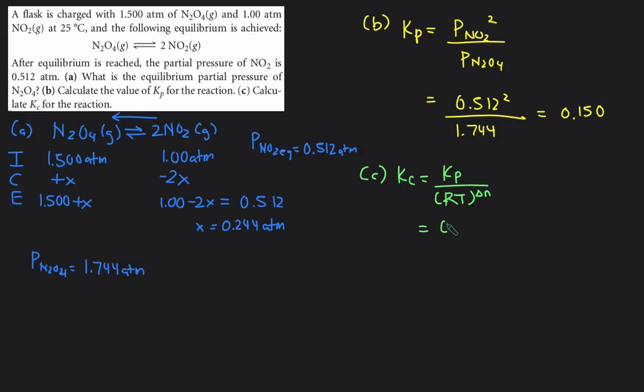Kp was 0.150. R is the gas constant 0.08206. T is the temperature but it has to be in Kelvin. Currently the temperature is given in degrees Celsius. So we add 273 to that to get the temperature in degrees Kelvin.